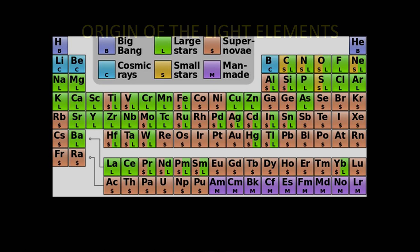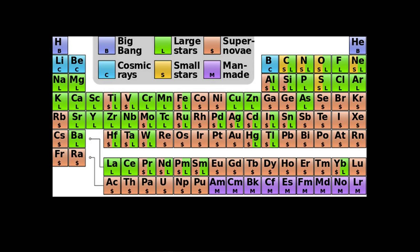Let me first show you the periodic table of all the elements. These are all the elements known to man, from hydrogen, lithium, beryllium, up to cobalt, nickel, copper, zinc, zirconium, radium, all sorts of things. And you can see that a few of them — the ones in light blue — really came from the Big Bang.